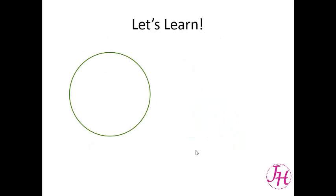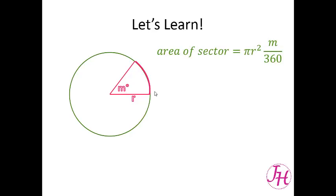Now let's talk about the area of a sector. We have a wedge or sector made by two radii, with the central angle labeled r and central angle m degrees. Remember that the area of a sector from geometry was πr², which is the area of the circle, times m over 360, where m is the measure of the central angle in degrees.